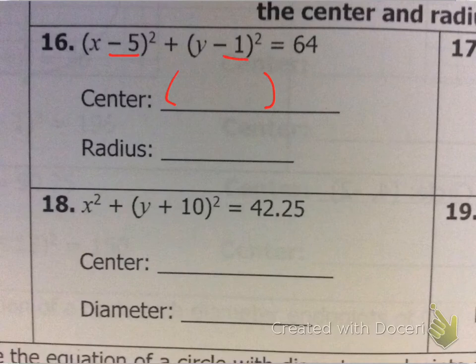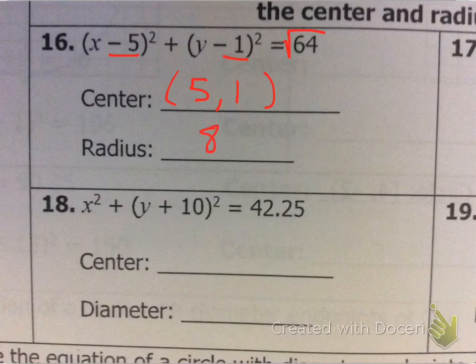So, now, here's what I've got to remember. If you're going backwards, keep in mind, these two numbers are going to be your center. But, think opposite. So, if you see minus 5, and minus 1, that would become positive 5, positive 1. The radius, remember, take the square root of this number right here. So, square root of 64 is 8. There you go. Got the radius, and you got the center.